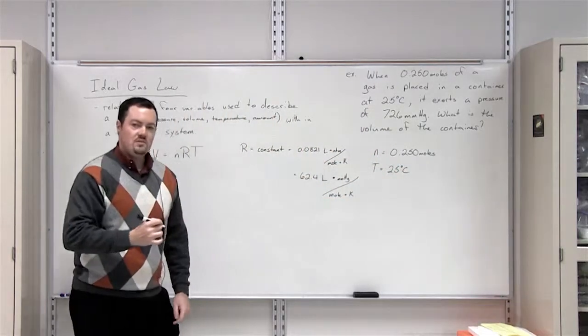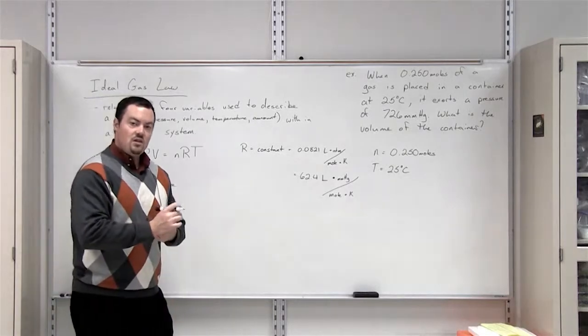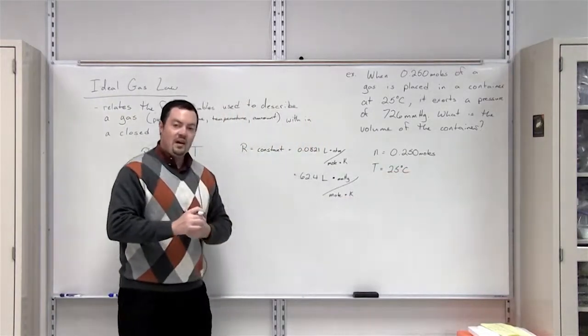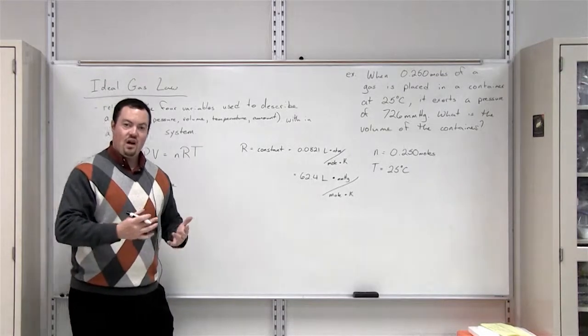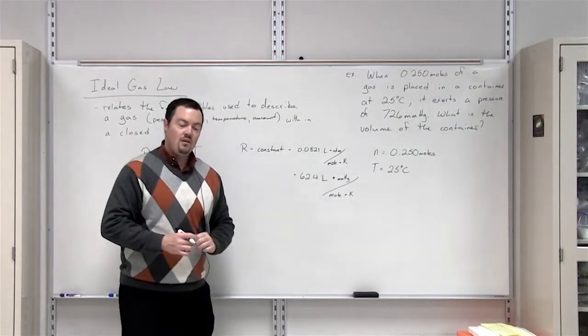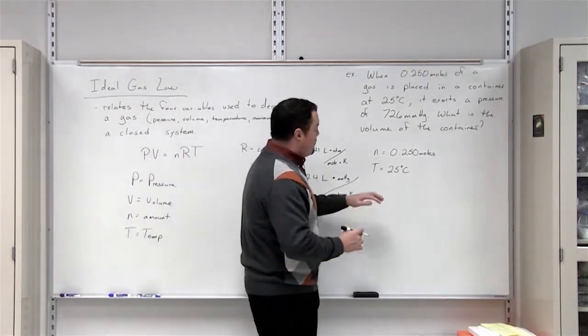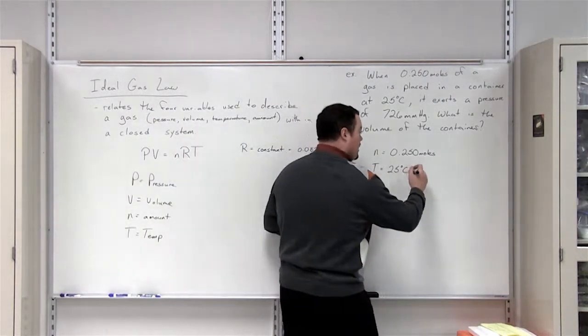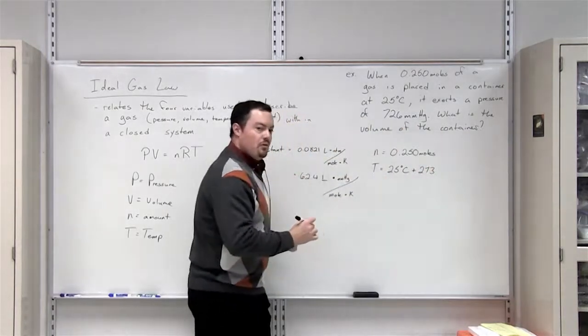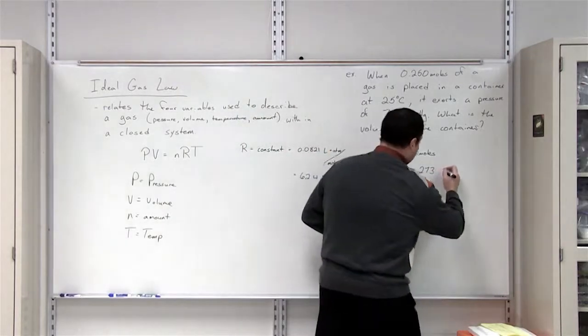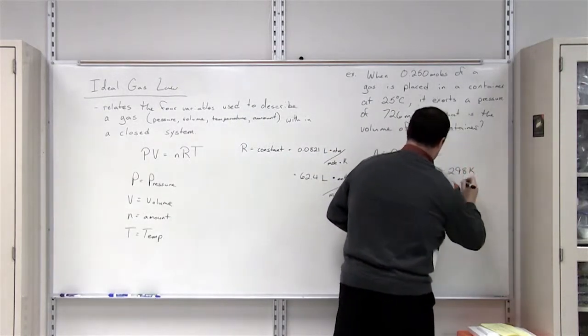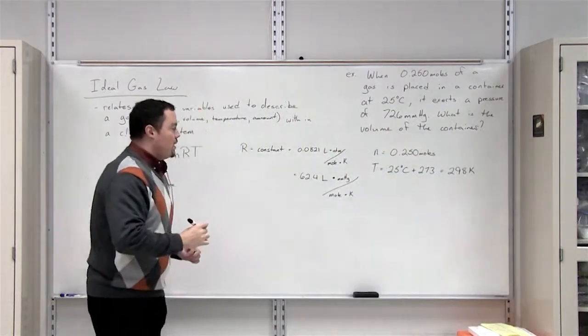However, the temperature is measured in Celsius. And we should know that any time we're using any type of gas law to solve an equation, our temperature value must be converted to Kelvin first. So in order to convert Celsius value to Kelvin, we simply add 273. So that makes our temperature 298 Kelvin.